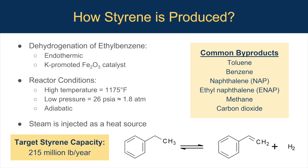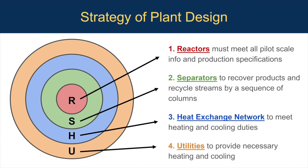The target capacity of our plant is 215 million pounds per year, operating at 300 days out of the year. When designing a plant, it is important to follow the proper sequence for equipment design and sizing. The RSHU model is followed, starting with the reactors — the most constrained piece of equipment. The separators are then specified, dependent on the product streams the reactors produce. The separators used include a three-phase separator followed by a four-distillation column sequence. After designing reactors and separators, this establishes the required heating and cooling loads, and a heat exchange network can be designed using pinch technology to maximize process heat exchange while minimizing utilities.